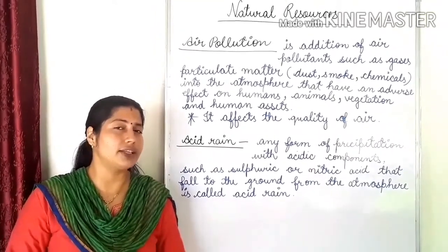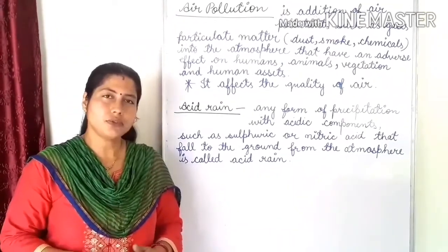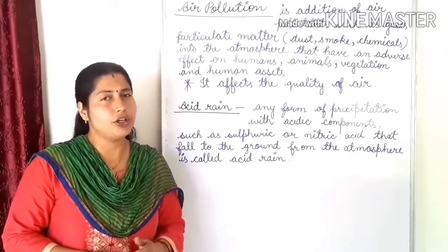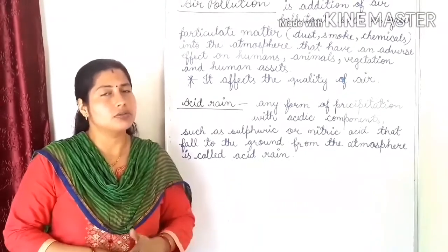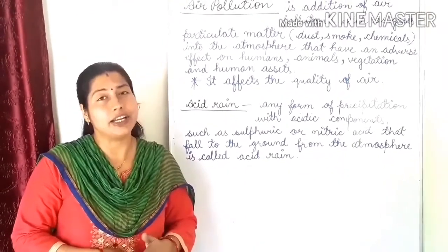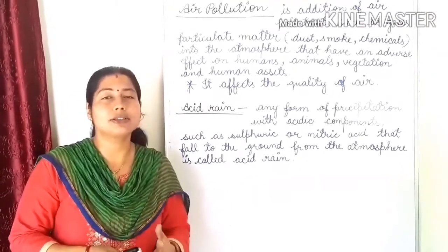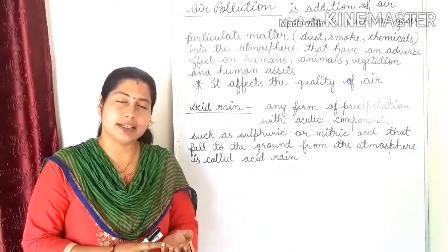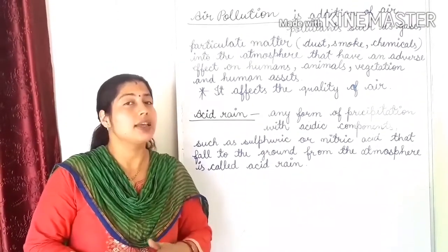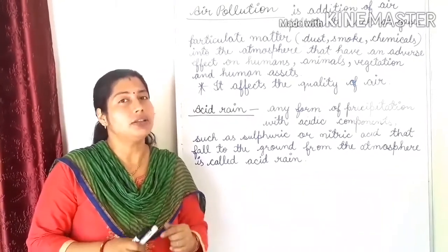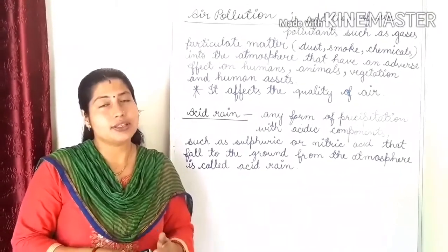And you know it causes a very harmful effect on the various life forms on the earth. So, what is air pollution? Air pollution is the addition of pollutants like gases, smoke, dust and chemicals — these are suspended particles — into the air. The addition of harmful substances like gases, vapors and suspended particles like dust, smoke and chemicals into the air has an adverse effect on humans, animals and human assets.